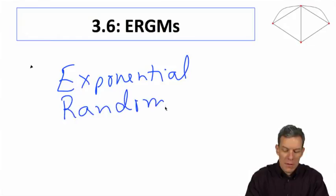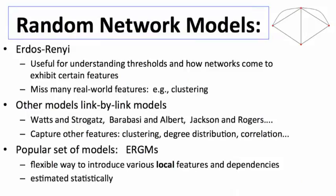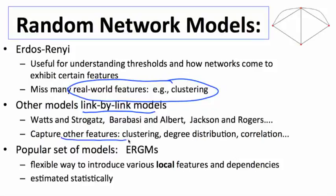These variations on basic models gave us some starting features but missed things like clustering. We had these other link-by-link models which captured other features - clustering, degree distribution, correlations and degrees - but there's a very popular set of models, exponential random graph models. They're popular because they allow us to introduce various local features, not just getting some clustering but actually allowing you to put in cliques of four or five.